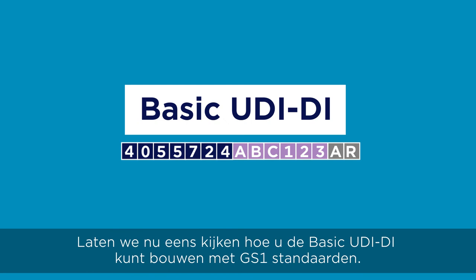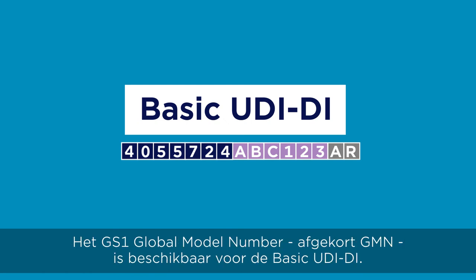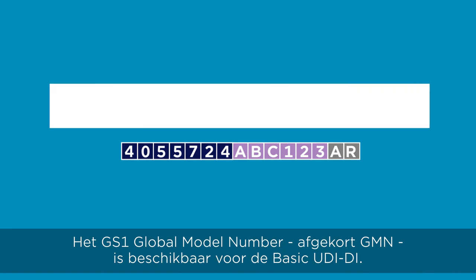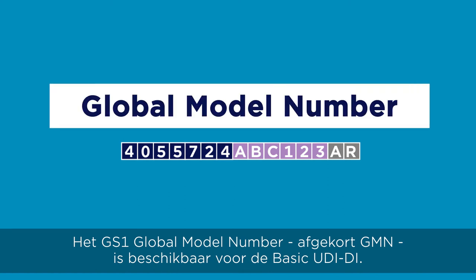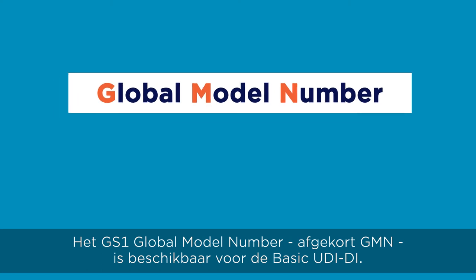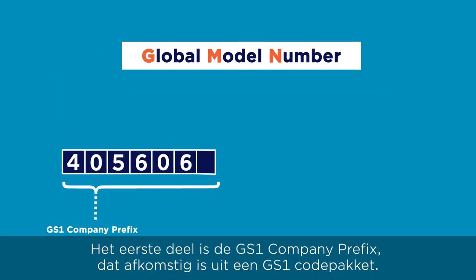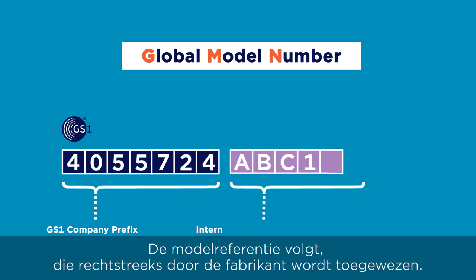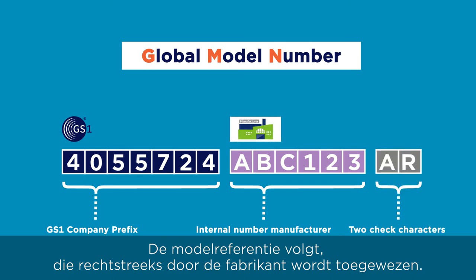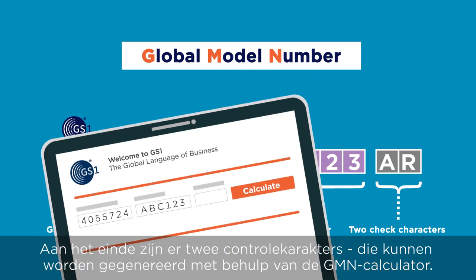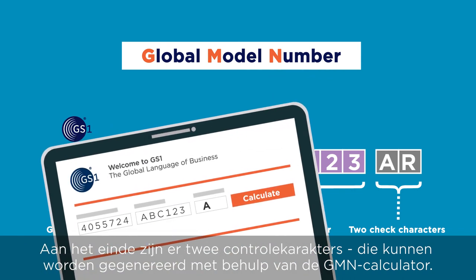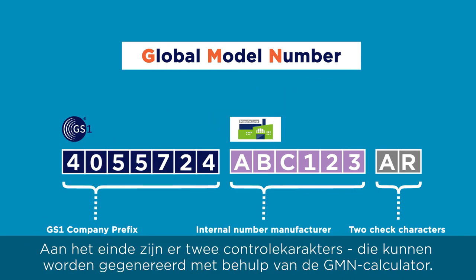Now let's see how you can build the basic UDI-DI with GS1 standards. The GS1 global model number, abbreviated GMN, is a GS1 key which allows the creation of a basic UDI-DI. The first part is the GS1 company prefix, which is uniquely assigned to a GS1 member company. The manufacturer internal number for that group of devices follows, which is assigned directly by the manufacturer. At the end of the GMN there are two check characters, which can be generated using the GMN calculator.